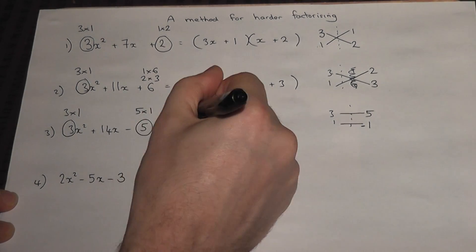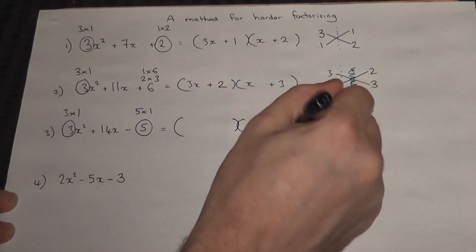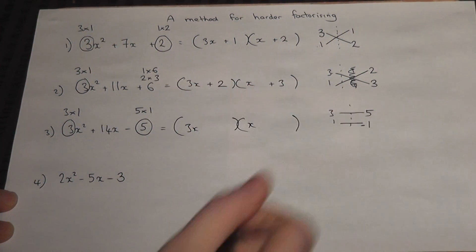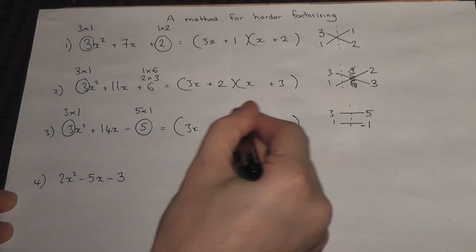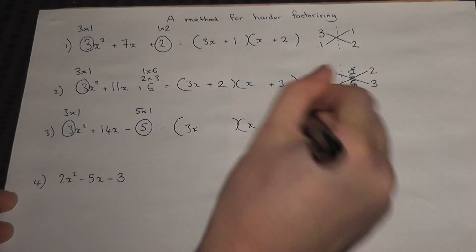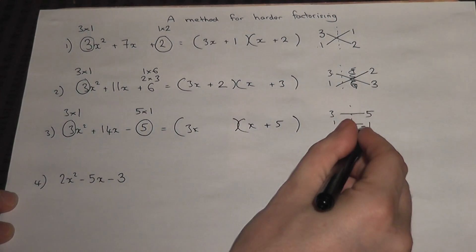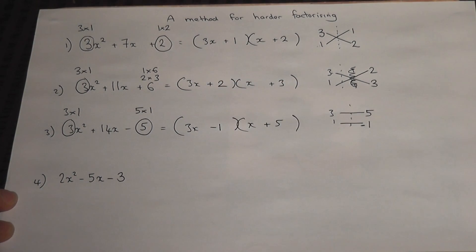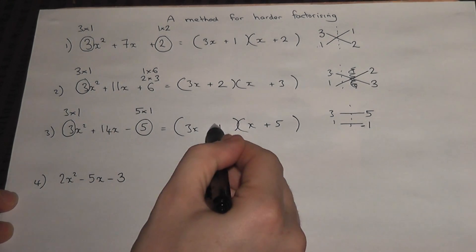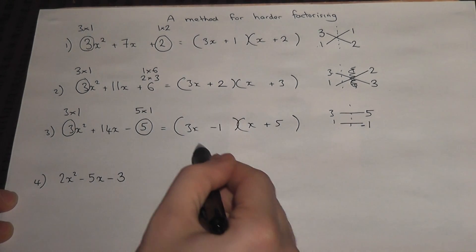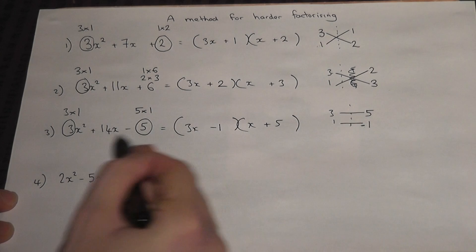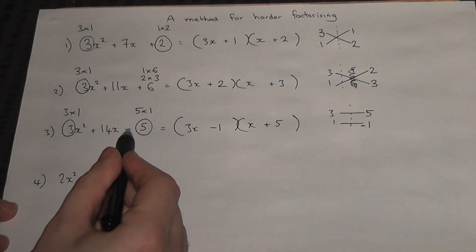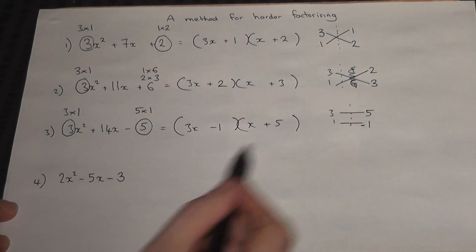So if I put a negative here, I get 15 take away 1 is 14, and 5 times negative 1 is negative 5. So for the brackets: 3x and x. The 3 gets times by a 5, so I put the 5 in the other bracket. The x gets times by a negative 1, so I put the negative 1 in the other bracket. This gives 3x squared, minus 5, a 15x, and minus x gives 14x. So when it's a negative for the third term, one of those numbers must be negative.